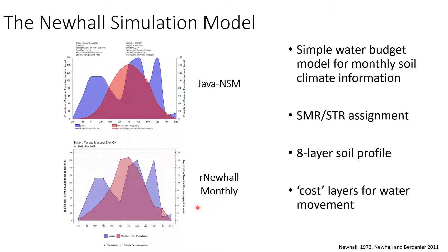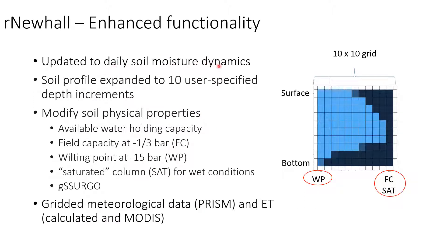The next thing we wanted to do was to modify this from a monthly time step to make it a daily soil moisture predictor. To do that, we modified our soil grid to a 10 by 10 grid from the previous 8 by 8. You can imagine this as a soil profile where you have a surface at the top, the bottom of the soil profile below, and then a continuum of dry to wet conditions represented by real values of volumetric water content at the wilting point and at field capacity. These data can come from most soil databases, including SSURGO. We've also added a saturated column for anything wetter than field capacity. Our inputs for the drivers are coming primarily from gridded meteorological data — in this case PRISM — and our evapotranspiration information is coming from MODIS.